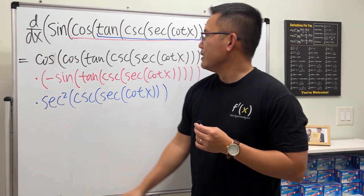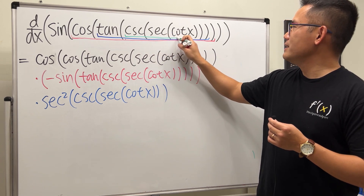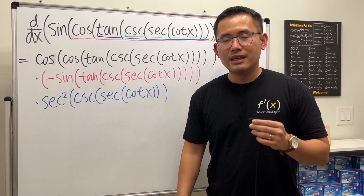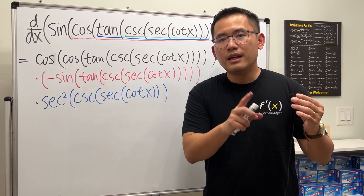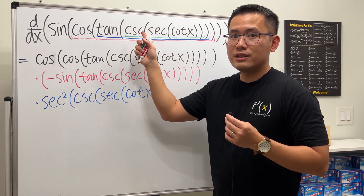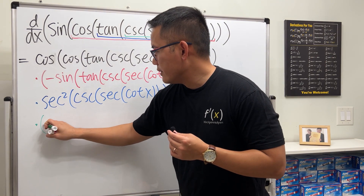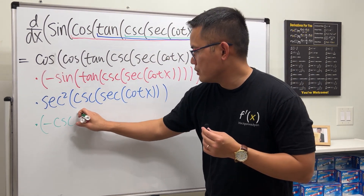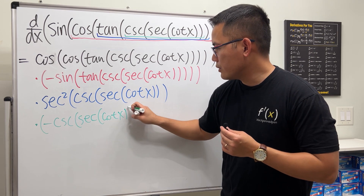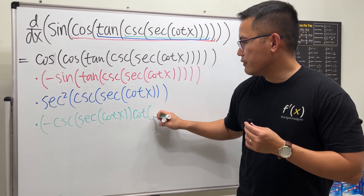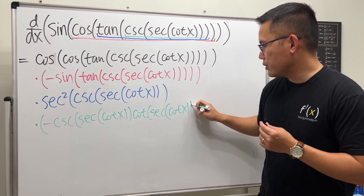Now going inside, in green, we differentiate cosecant. The derivative of cosecant is negative cosecant of the inside times cotangent of the inside — it's a cofunction so it carries a negative sign. That gives us negative cosecant of secant of cotangent of x, times cotangent of secant of cotangent of x.